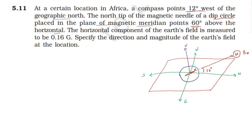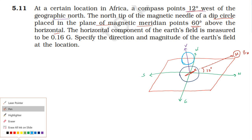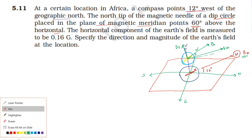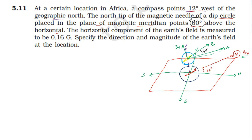The dip circle is placed in the plane of the magnetic meridian — a vertical plane. The magnetic needle of the dip circle makes an angle of 60 degrees above the horizontal. The horizontal component BH and the vertical component together form a right triangle with the resultant field B as the hypotenuse.